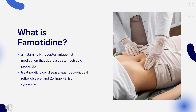Famotidine, sold under the brand name Pepcid among others, is a histamine H2 receptor antagonist medication that decreases stomach acid production. It is used to treat peptic ulcer disease, gastroesophageal reflux disease, and Zollinger-Ellison syndrome. It is taken by mouth or by injection into a vein. Famotidine was patented in 1979 and came into medical use in 1985. It is available as a generic medication.